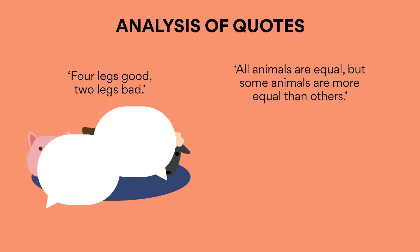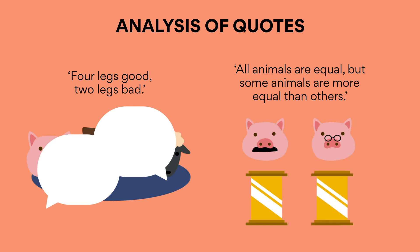'All animals are equal, but some animals are more equal than others.' This quote exemplifies the pigs' abuse of logic and language to keep their power over their followers. The evidently senseless and illogical meaning behind this phrase is an example of the methods that the leaders of the farm use in order to brainwash their followers. The quote also suggests that the pigs' real intention is not to rise up against the oppression of humans, but to become part of the elite — those who possess greater rights and power than the rest of underprivileged society.